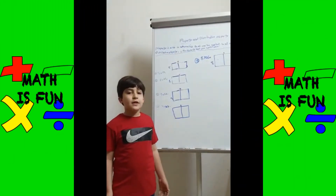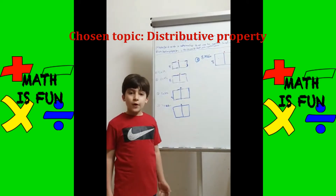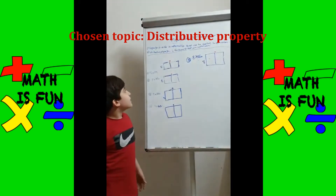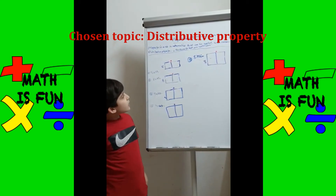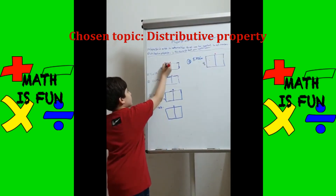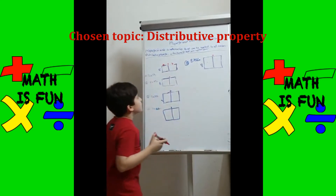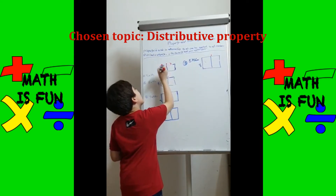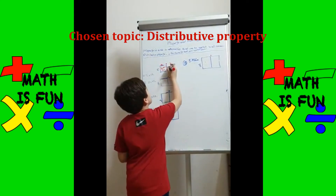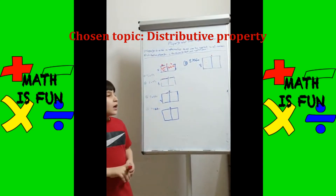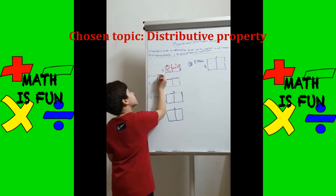My name is Mohamed Madi Hassan. I'm in grade 5. Today I'm going to explain the distributive property. Property means a rule in mathematics that can be applied to all numbers. The distributive property is applied as follows. For example, 5 times 17: here you write 10 and here you write 7. So 5 times 10 is 50 and 5 times 7 is 35. When you add 50 plus 35, the answer is 85.